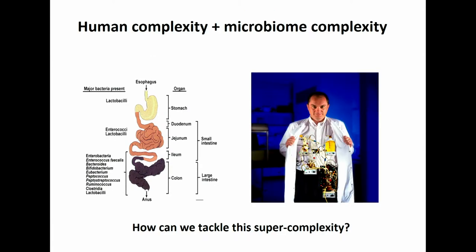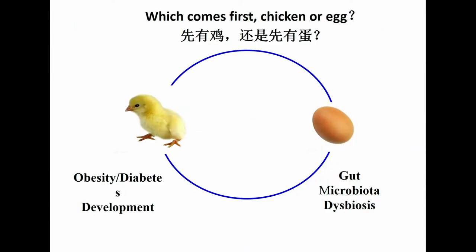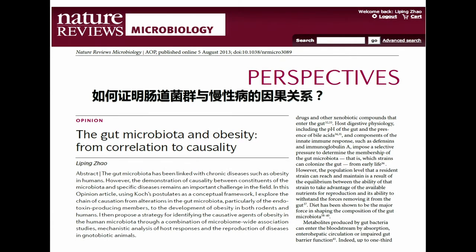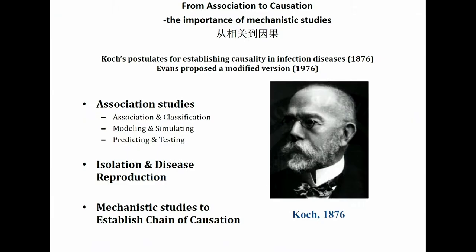The human body is already very complex, and adding to that complexity, you have a microbiome which is also very complex. So how can we tackle this super complexity? We also need to ask the causality question: did the microbiota change because of the disease, or did the disease happen because of the microbiota change? This is always a very fundamental question when you study gut microbiota in health and disease. We argue that even though it's a complex microbiota ecosystem, we need to follow an approach for identifying the causative agent, but we must consider the polymicrobial and ecological nature of gut microbiota.